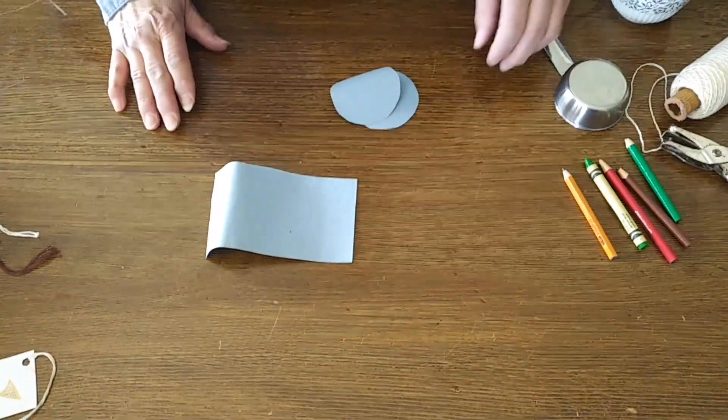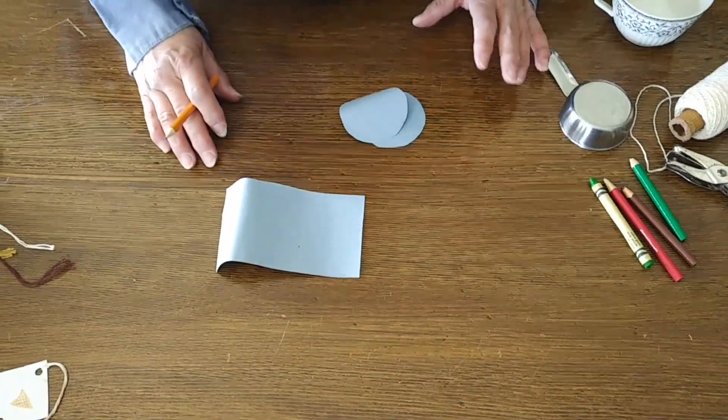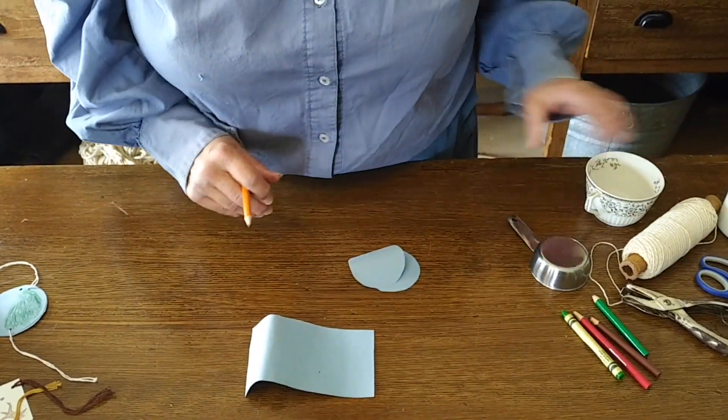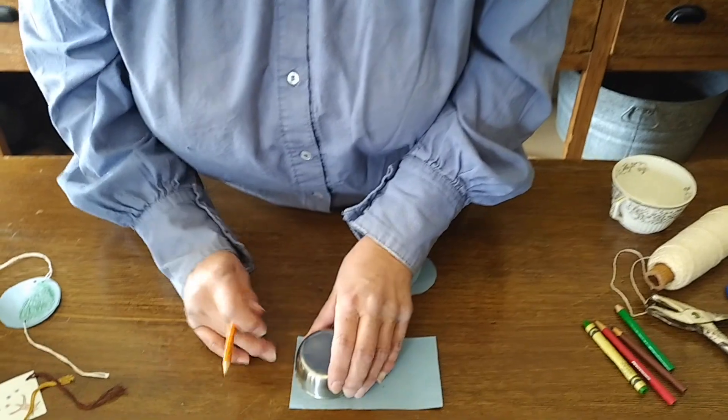First off, you're going to need some paper. It can be construction paper, white paper, heavy paper, whatever you have. And then you need to draw a circle. Maybe you've got a cup at home you can use, a glass. I'm just going to use a measuring cup that I have handy, and I'm going to draw around my cup until I have a circle.